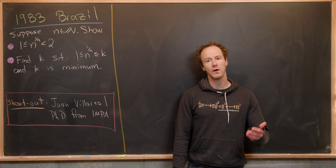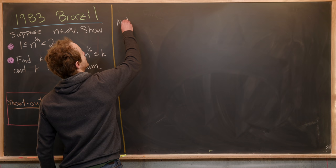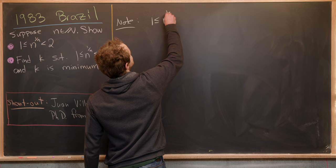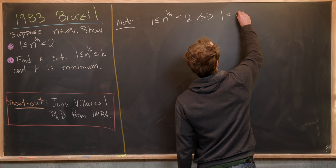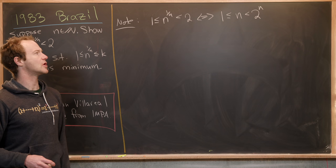Let's jump into the solution for this first part. We notice that 1 ≤ n^(1/n) < 2 is equivalent to 1^n ≤ n < 2^n, i.e., 1 ≤ n < 2^n. So if we can show that inequality then we're good to go.